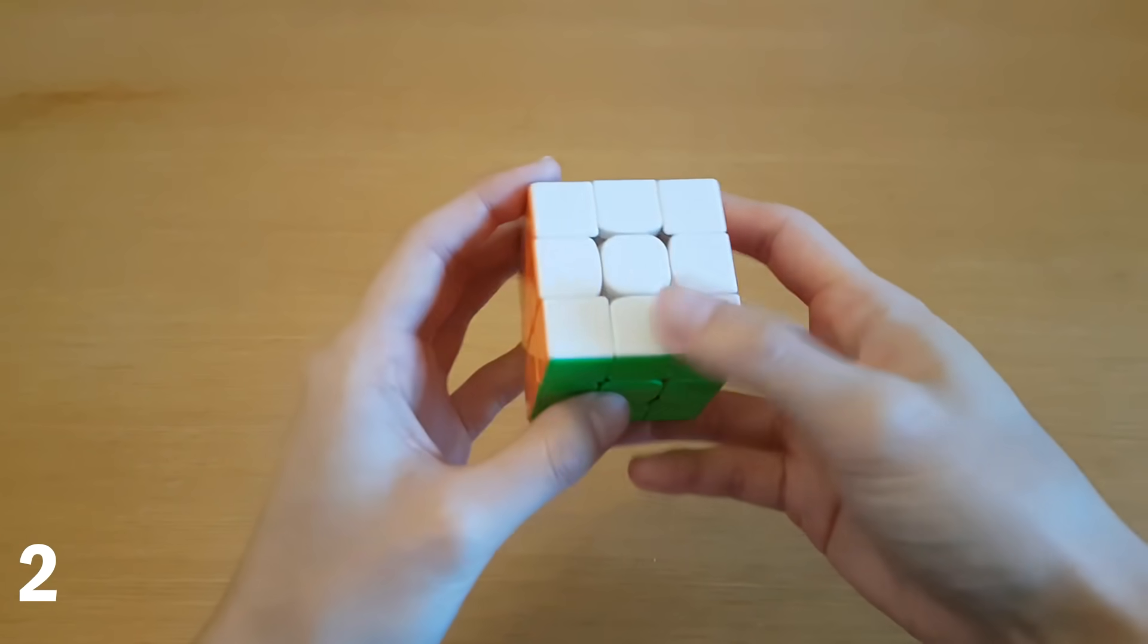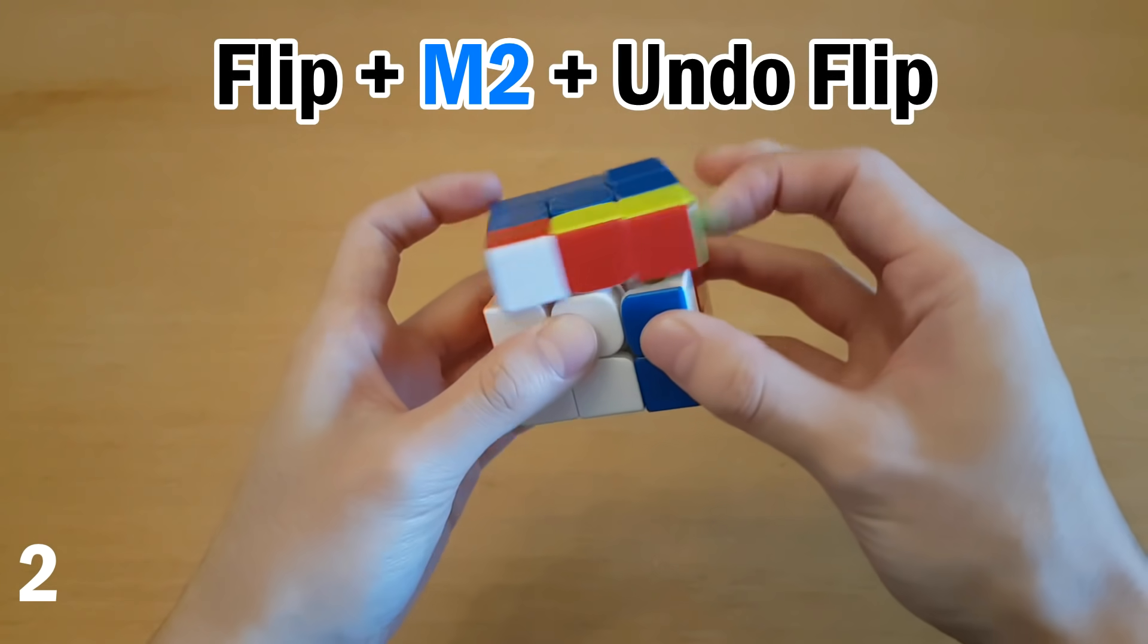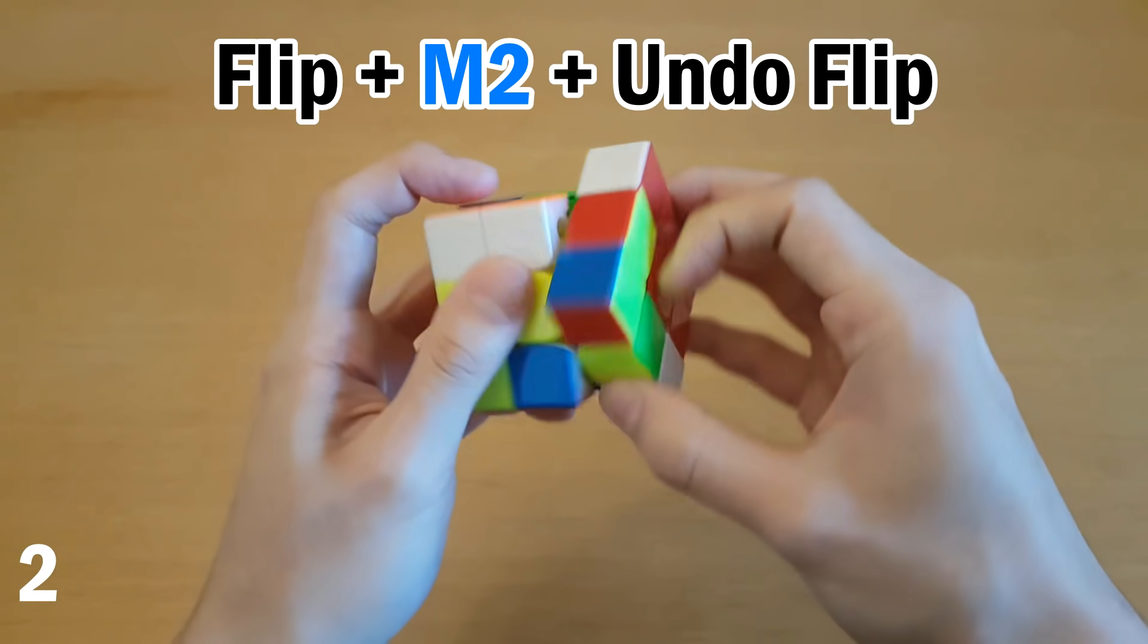Number two, the Q target. For Q or the BU target, a lot of people will do some sort of flip on this edge, like that, and then M2, and then undo the flip.